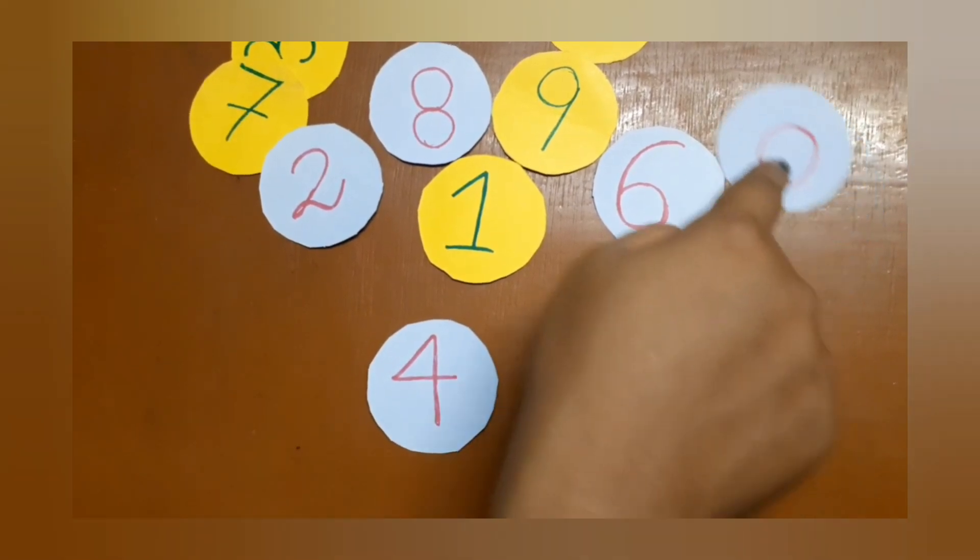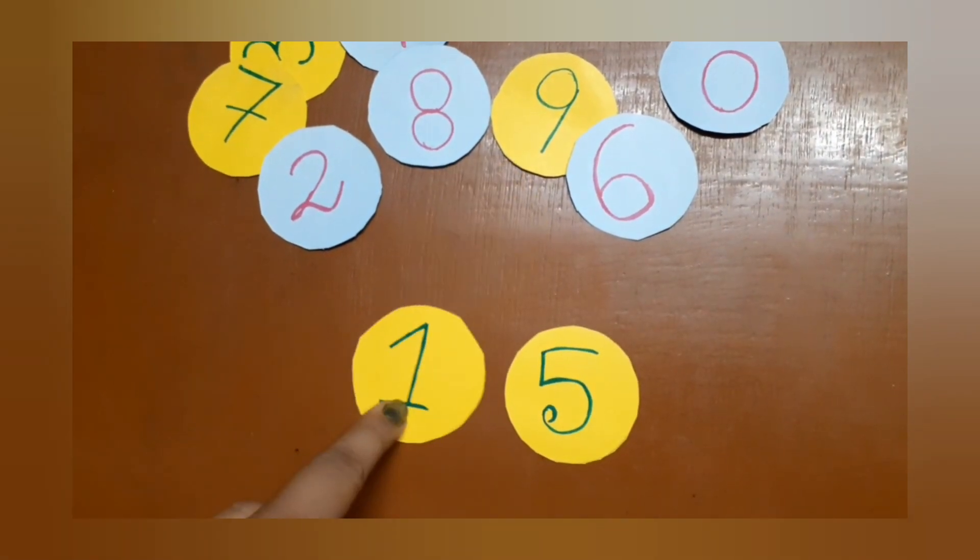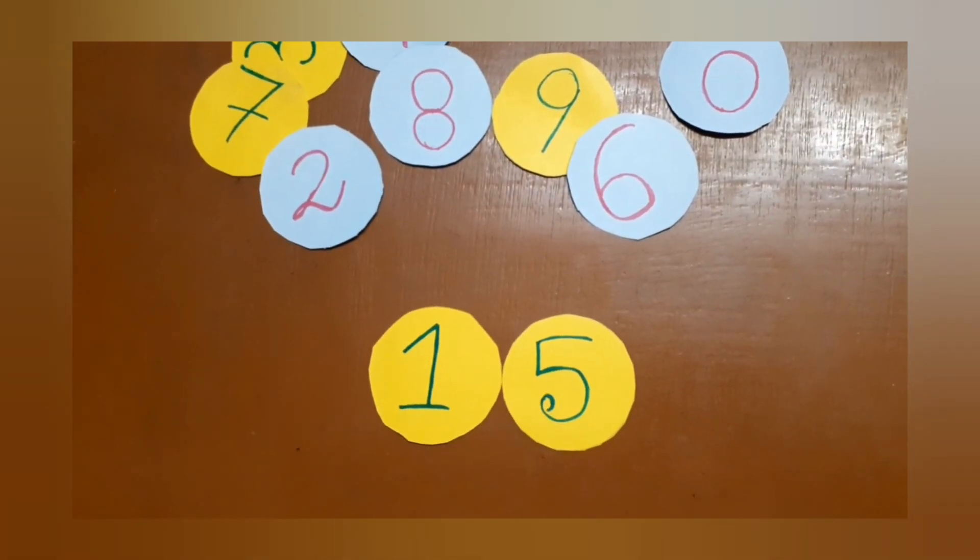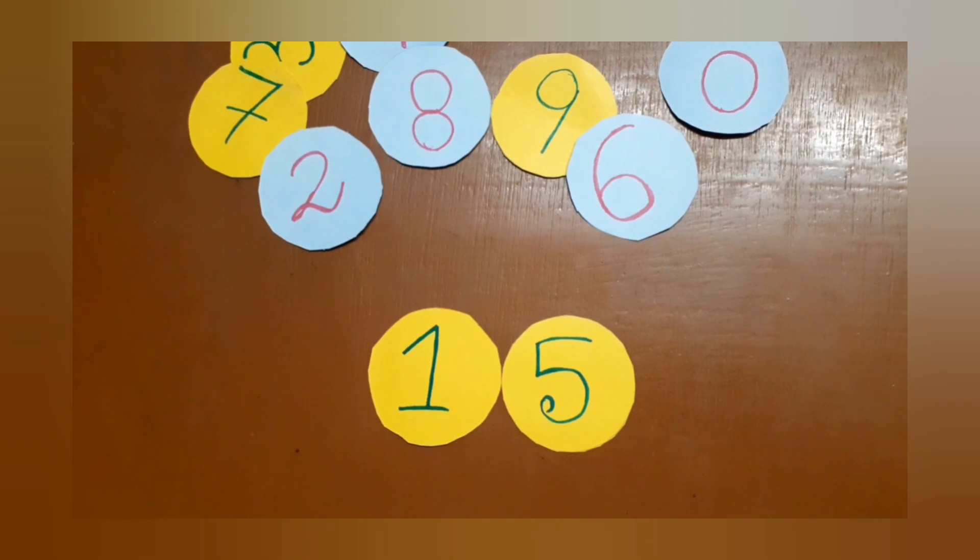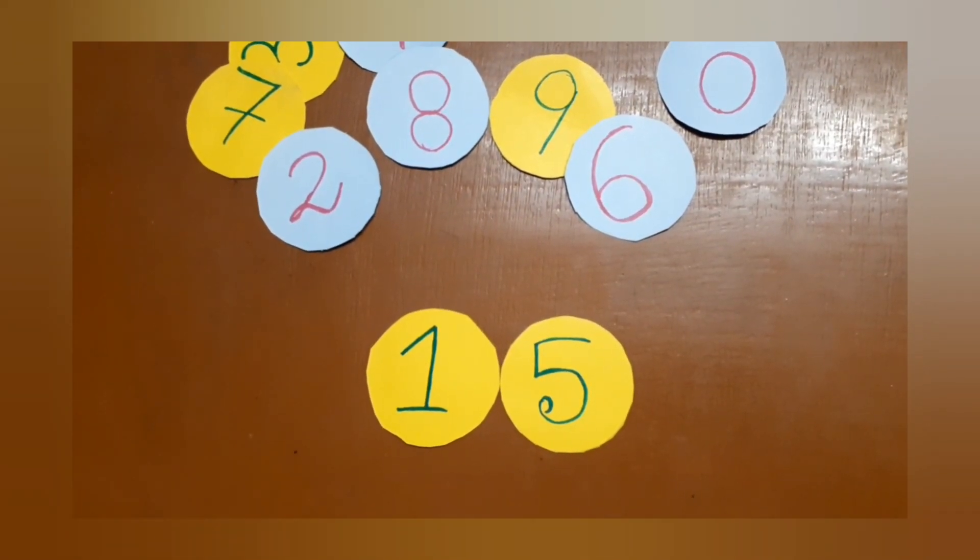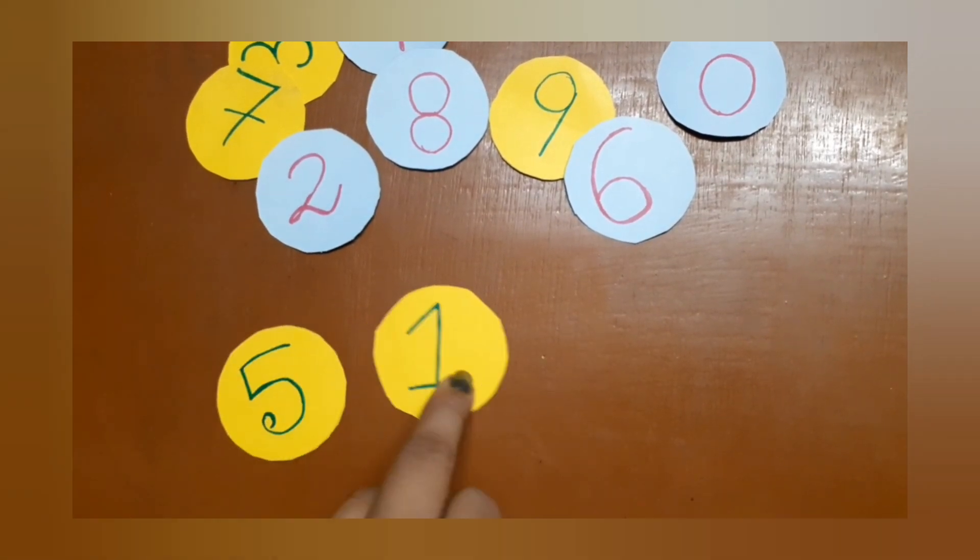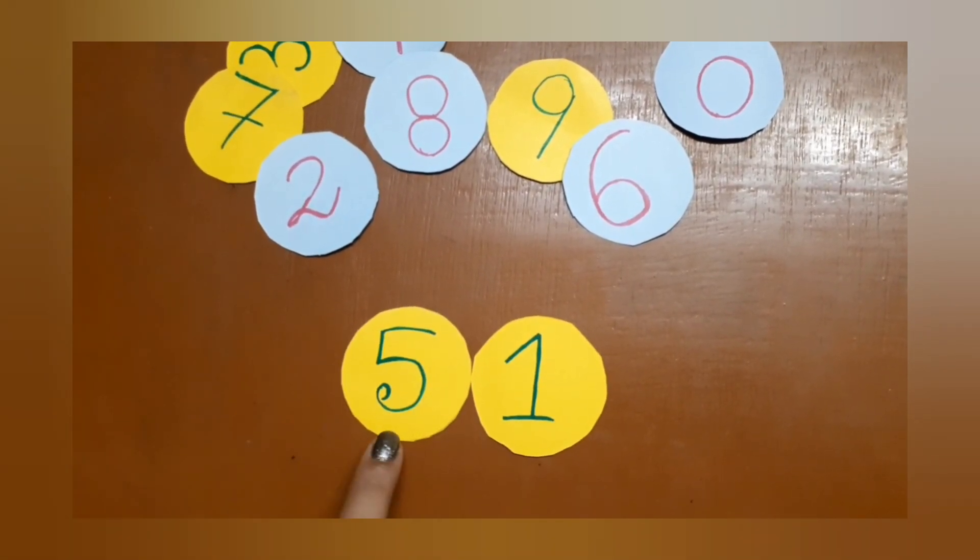Now let me take some other numbers. Let's take this five and one. So one five, they are one five, fifteen. Now if we change their place, they become tell me? Five one, good, it is fifty-one.